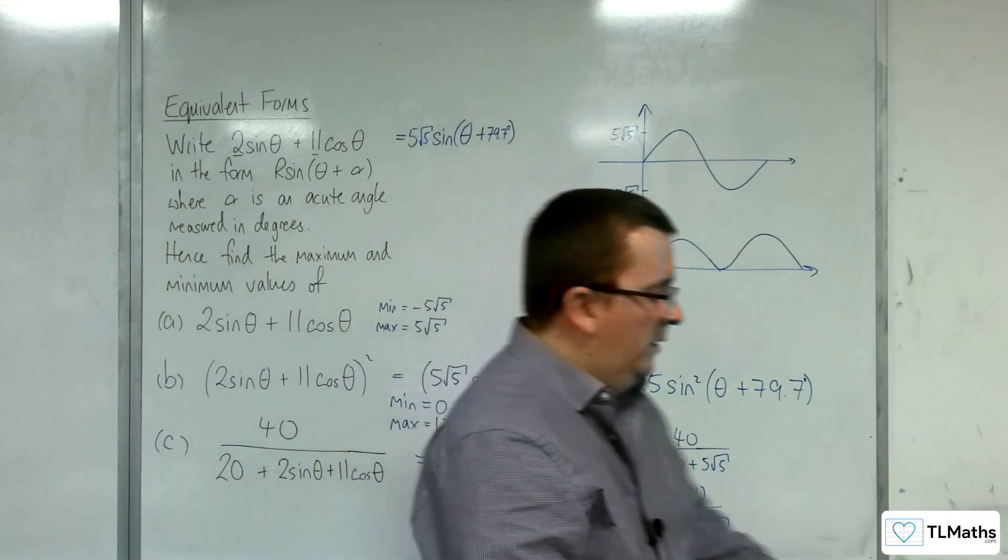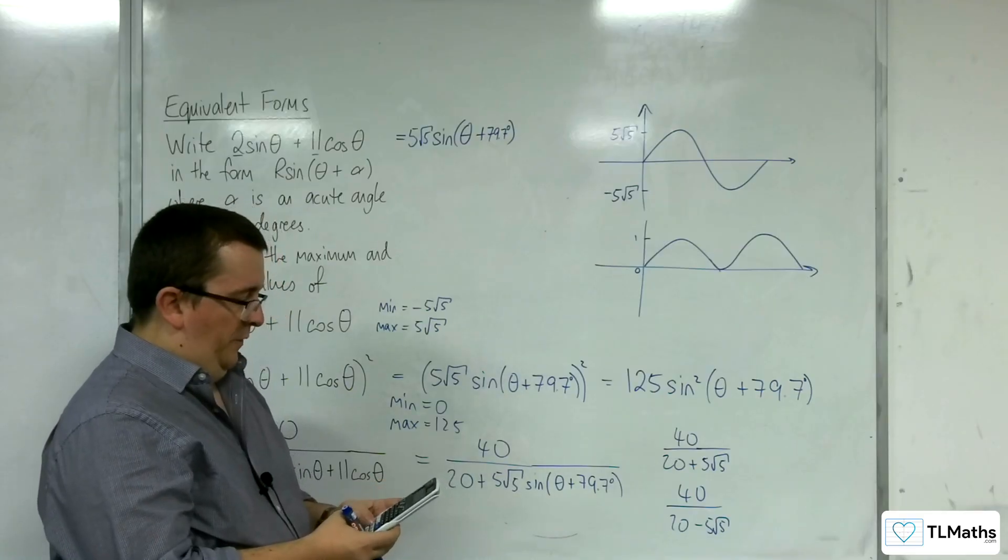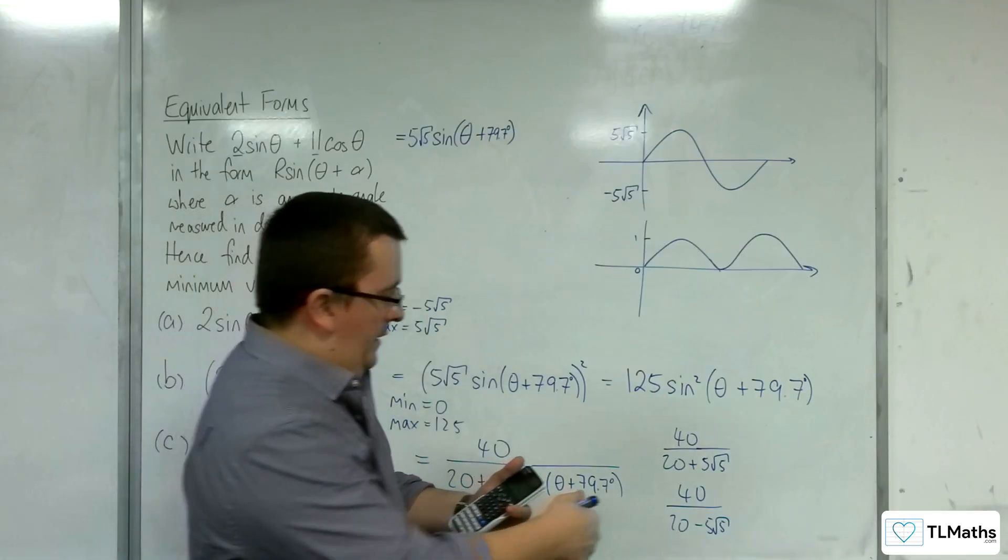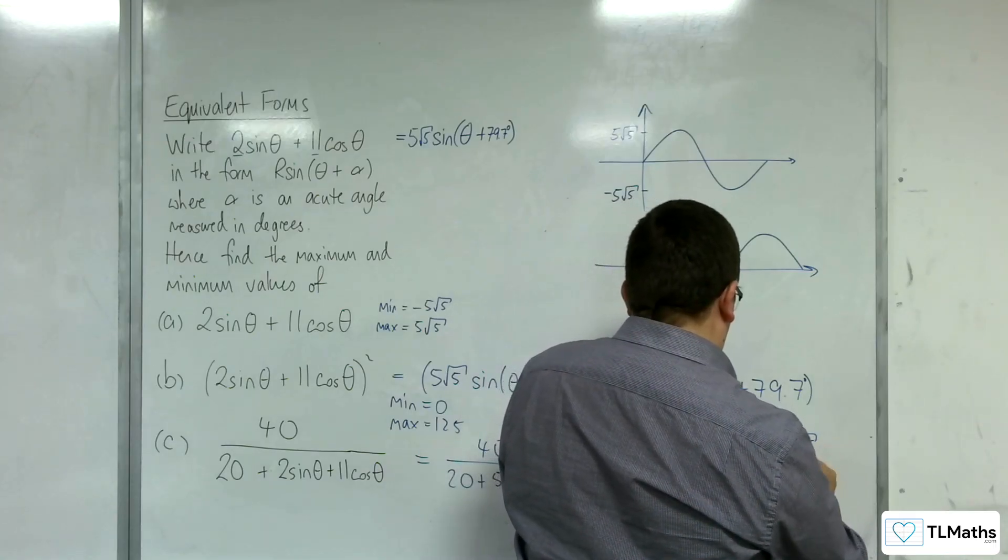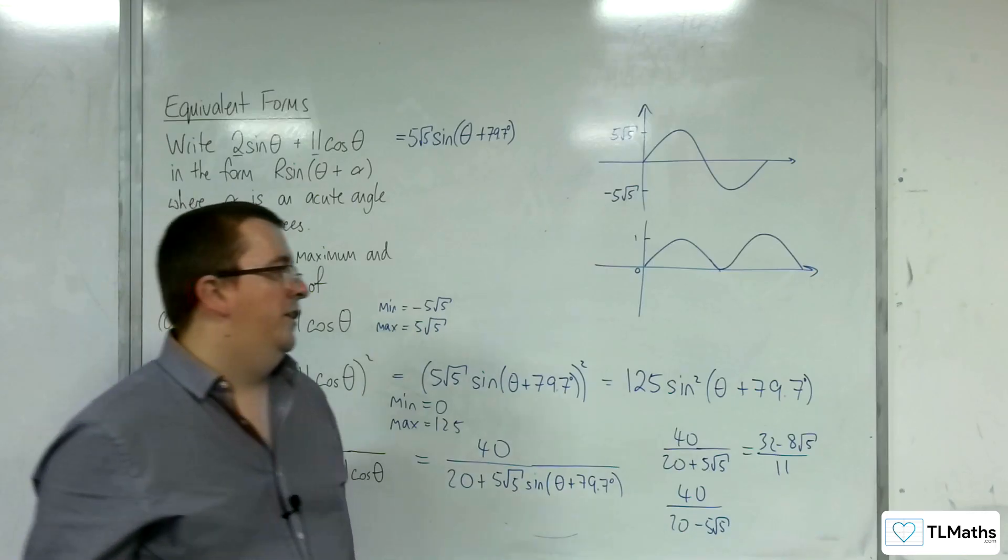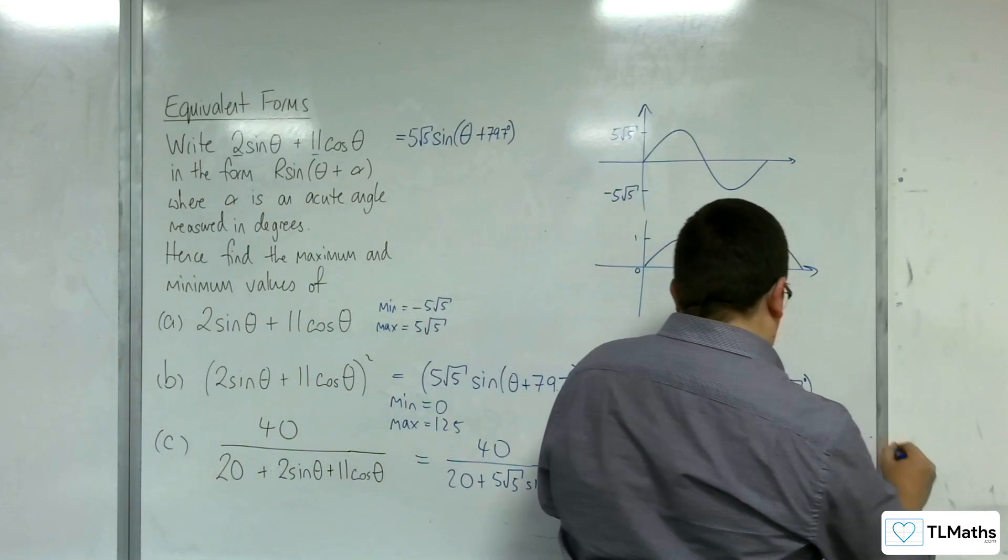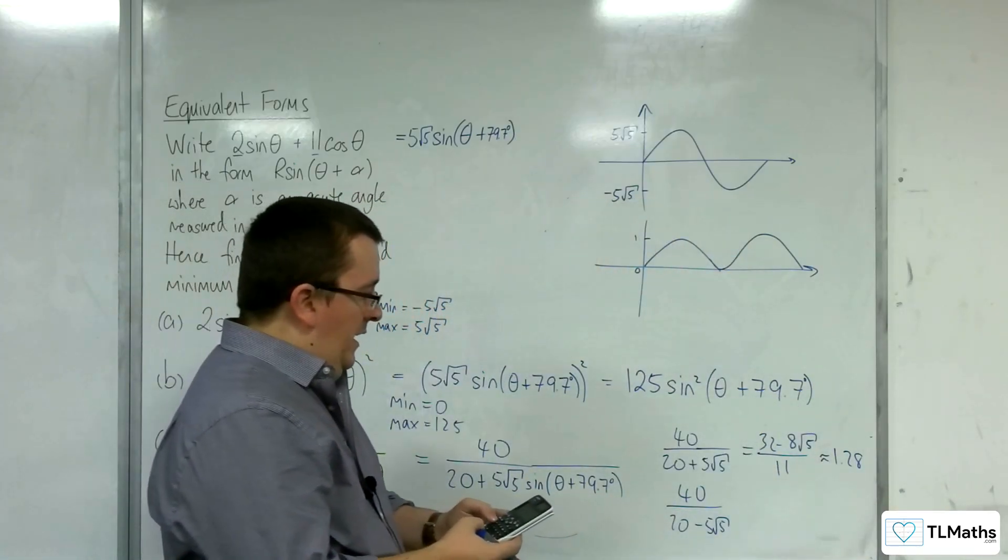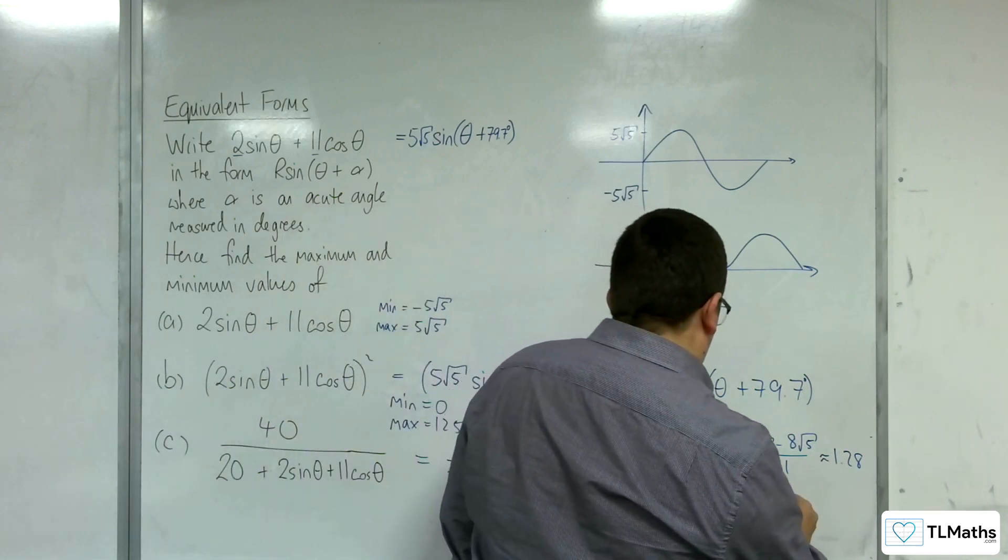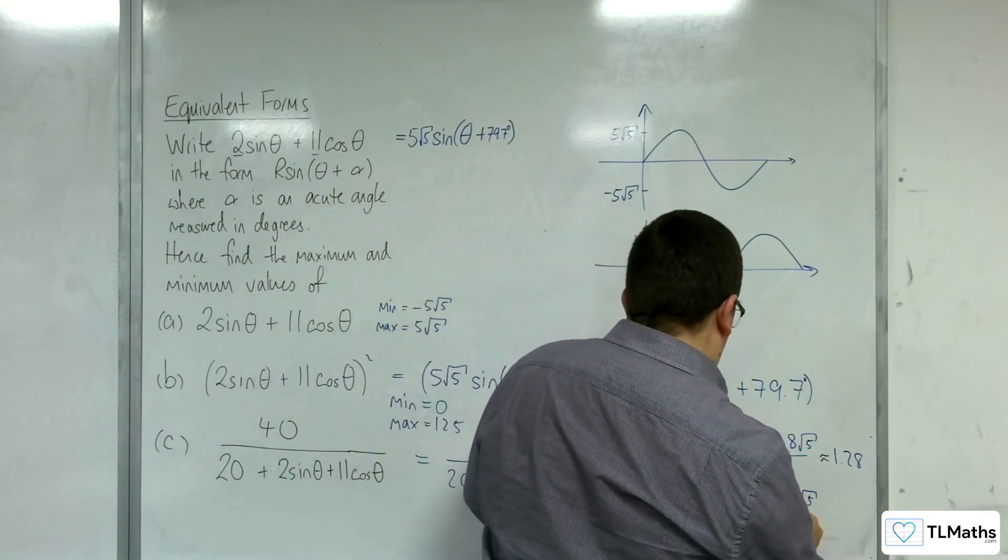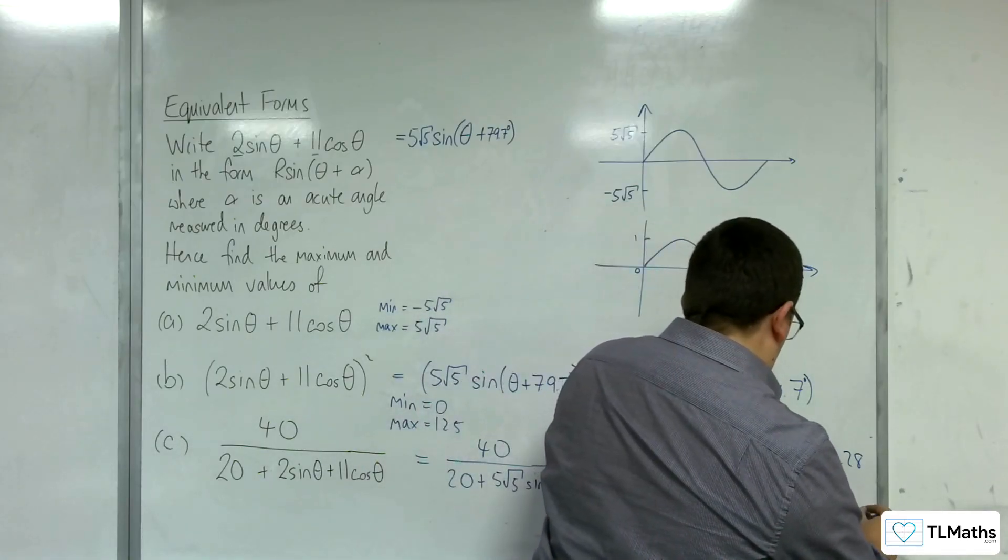So, 40 divided by 20 plus 5 root 5 is 32 take away 8 root 5 over 11. So, 40 over 20 take away 5 root 5 is 32 plus 8 root 5 over 11. And so, that's approximately 4.54.